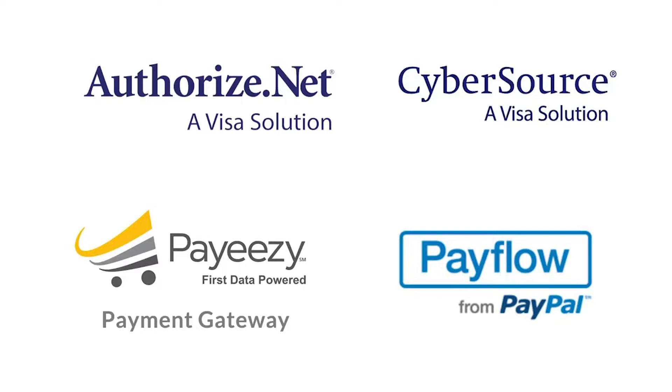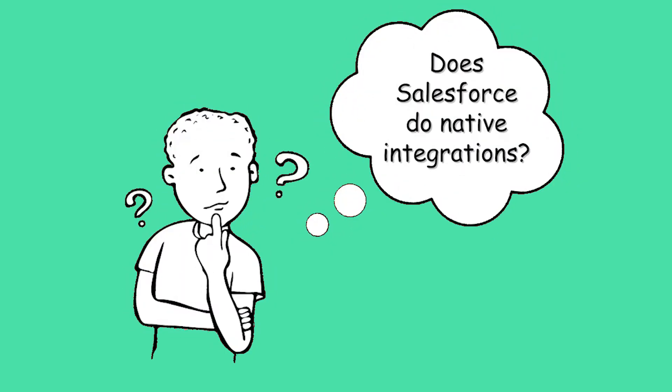When I say out-of-the-box or native gateway connectors, I'm talking about the four e-commerce gateways that Salesforce billing supports as part of their platform offering. You might be saying: I've been a Salesforce customer for a long time and you don't often see them do integrations. You'd be absolutely right. So why do these even exist? Where did they come from?